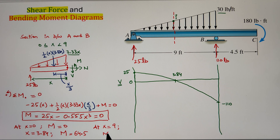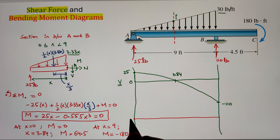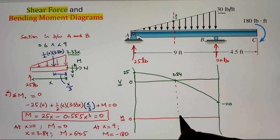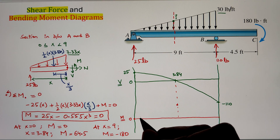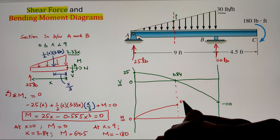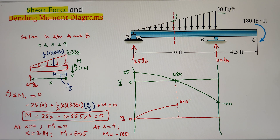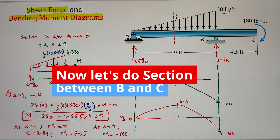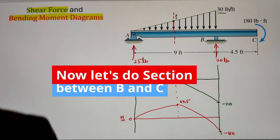To start, we identify the points at which we have calculated the value. At X equals to zero, the moment is zero. At X equals to 3.84, the moment value is 64.5. And at X equals to nine, I have a moment value of negative 180. Once we have these points identified, we need to identify the profile. Since I have a cubic equation, my diagram will follow a cubic profile going up to the highest point of 64.5 as that is the point of inflection, and afterwards the moment diagram starts going in the downward direction, going all the way to negative 180.